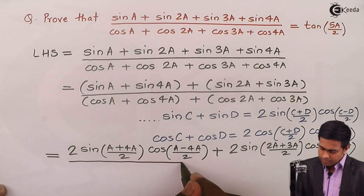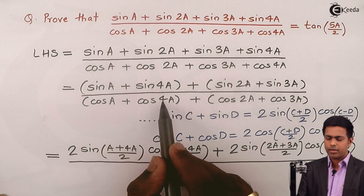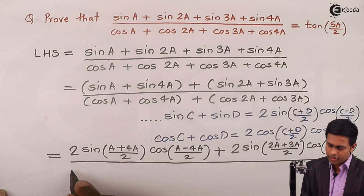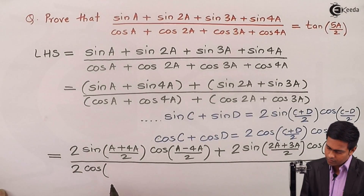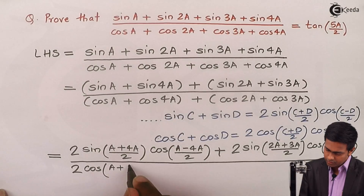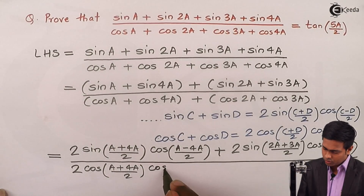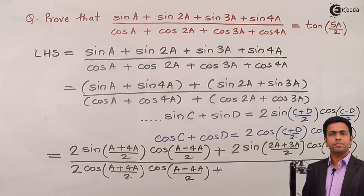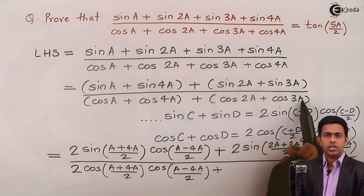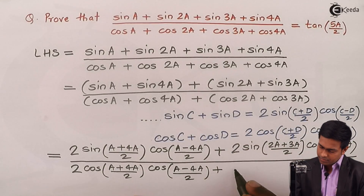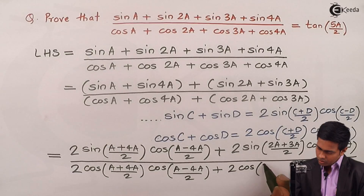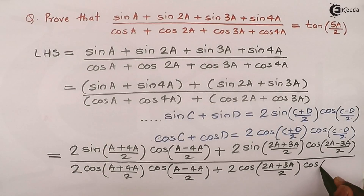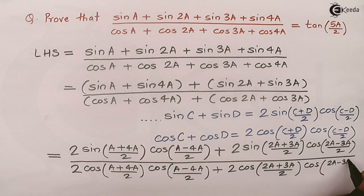For the denominator, with cos a + cos 4a where C = a and D = 4a, applying the cosine formula gives 2 cos((a+4a)/2) cos((a−4a)/2). Then for cos 2a + cos 3a with C = 2a and D = 3a, we get 2 cos((2a+3a)/2) cos((2a−3a)/2), which gives 2 cos(5a/2) cos(−3a/2) + 2 cos(5a/2) cos(−a/2).